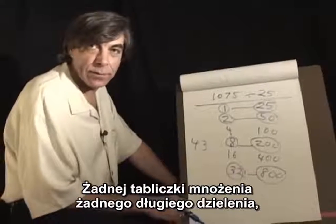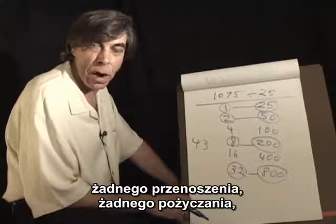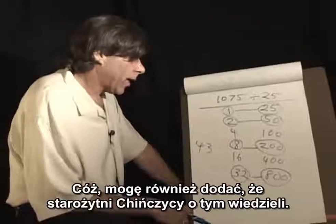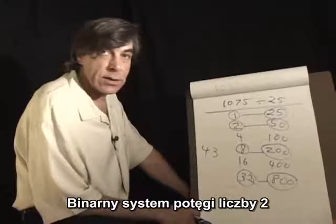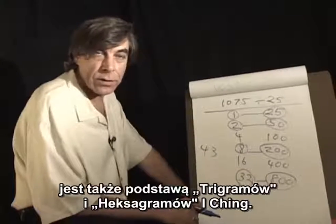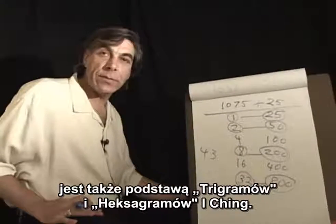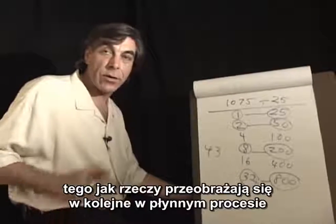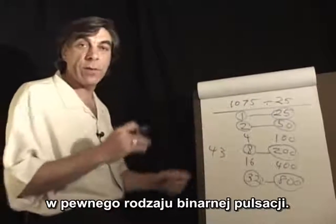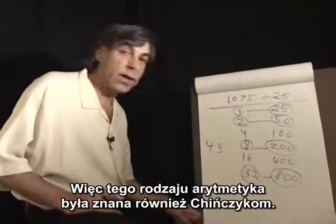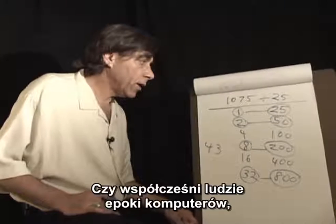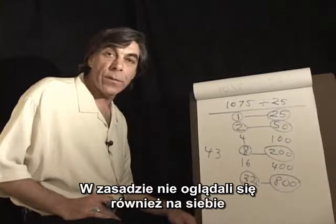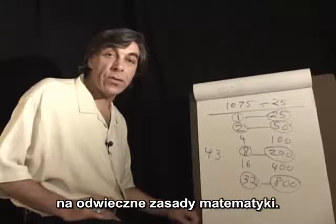No multiplication table, no long division, no carrying, no borrowing — it's just very straightforward. Now how did the ancient Egyptians know this? The ancient Chinese also knew this. The binary system of powers of two is also the basis of the trigrams and hexagrams of the I Ching — the flowing nature of the universe, how things turn into one another in a binary kind of pulsation. So this kind of arithmetic was known to the Chinese as well. Did the modern computer people look to the ancient Egyptians or the Chinese? No — they didn't look to each other. But they all looked to the same place: the eternal principles of mathematics. And the Egyptians were quite adept at looking at eternal principles.